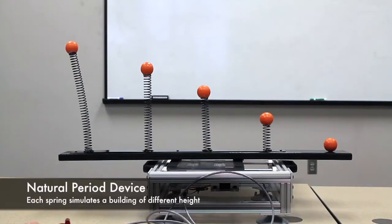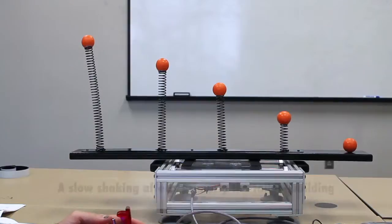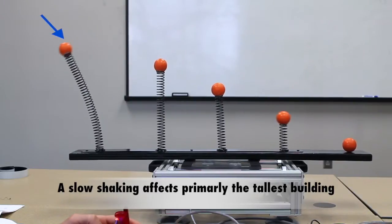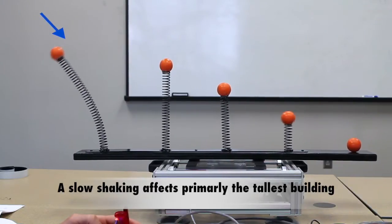A simulation using a natural period device was used to assess the behavior of buildings of different heights under different motions. With a long period, approximately 2 seconds, the tallest building is showing considerable displacement compared to other buildings.